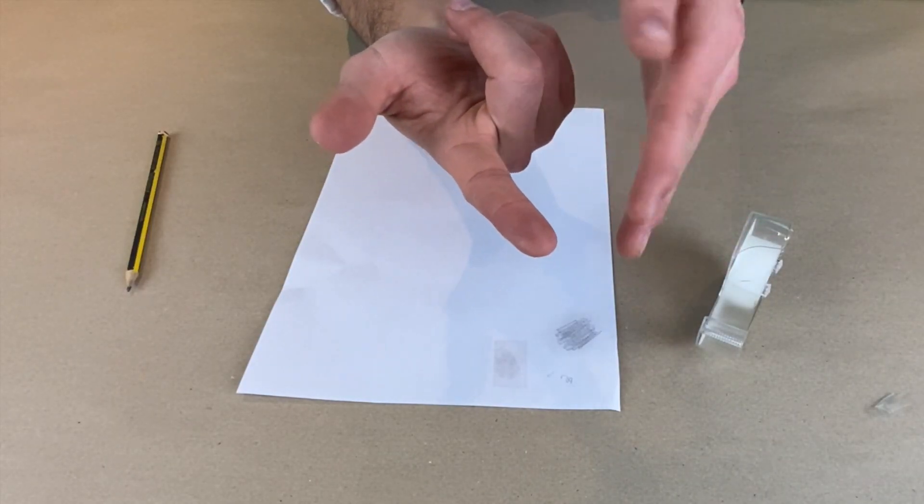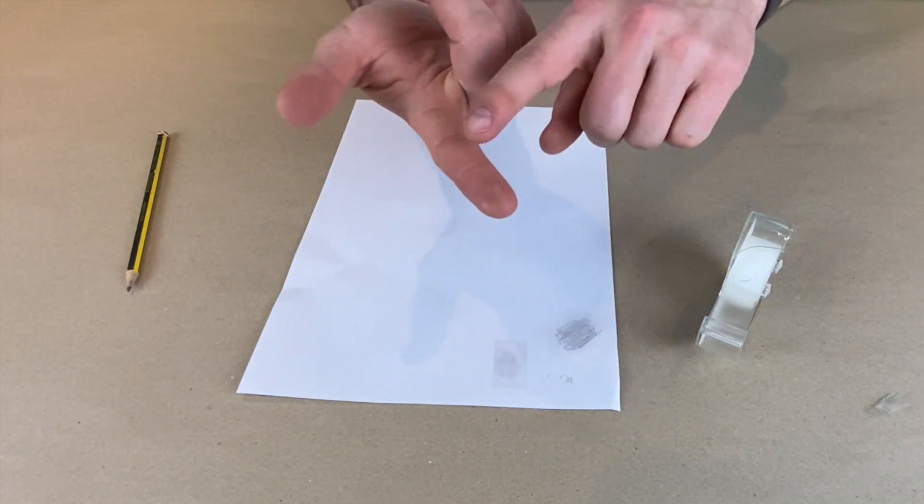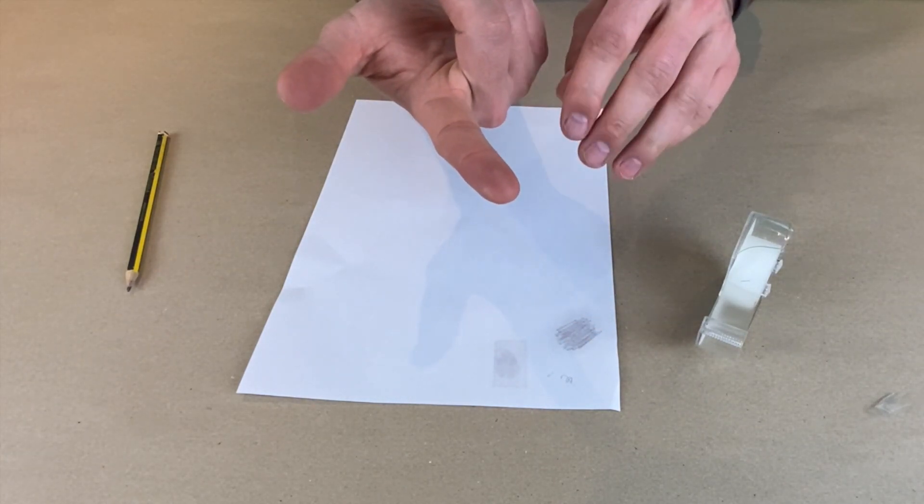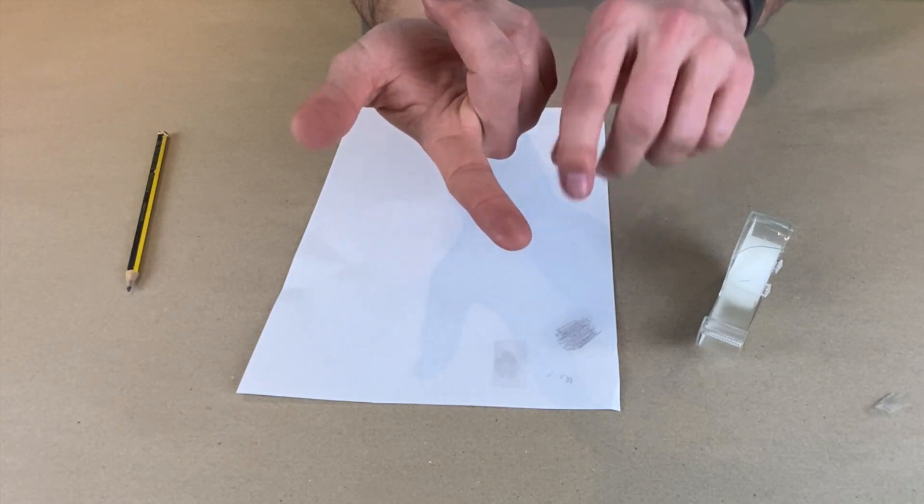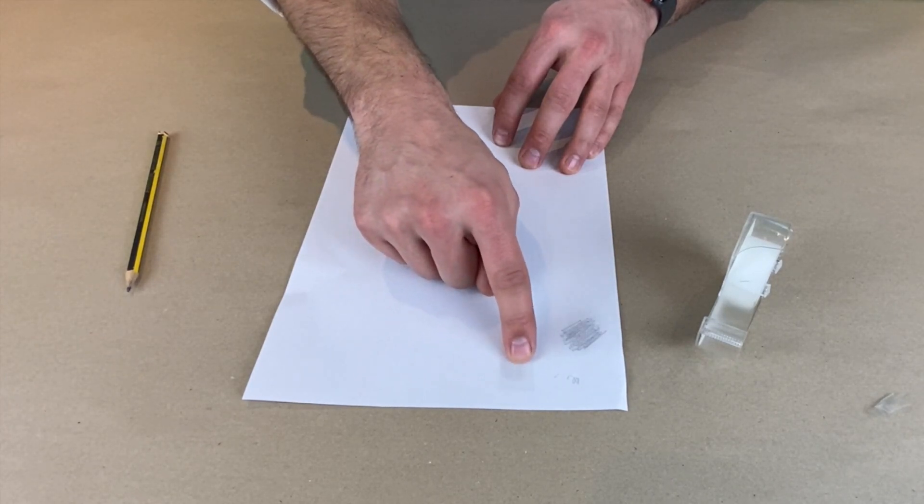Because our fingerprint is made of ridges, high bits, low bits, high bits, low bits, the dust gets on the high bits, but it doesn't really fill up the little gaps in between. So we get lovely, clear patterns.